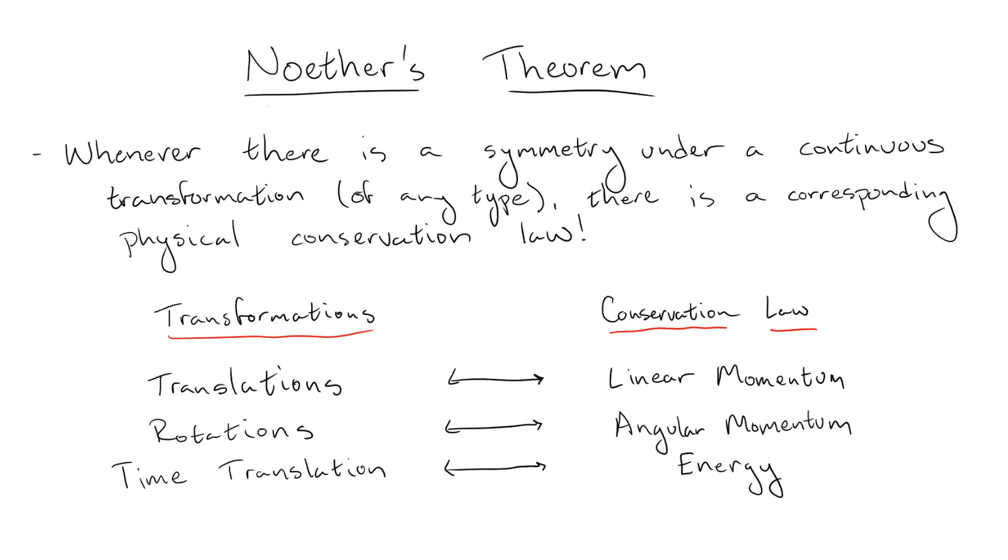One great example of this is the conservation of electric charge, also known as electrical current conservation. We know that electrical currents are conserved, but there's not really a clear physical transformation which leads to this sort of conservation. So, we can build internal symmetries into our theories which lead to this sort of current conservation.